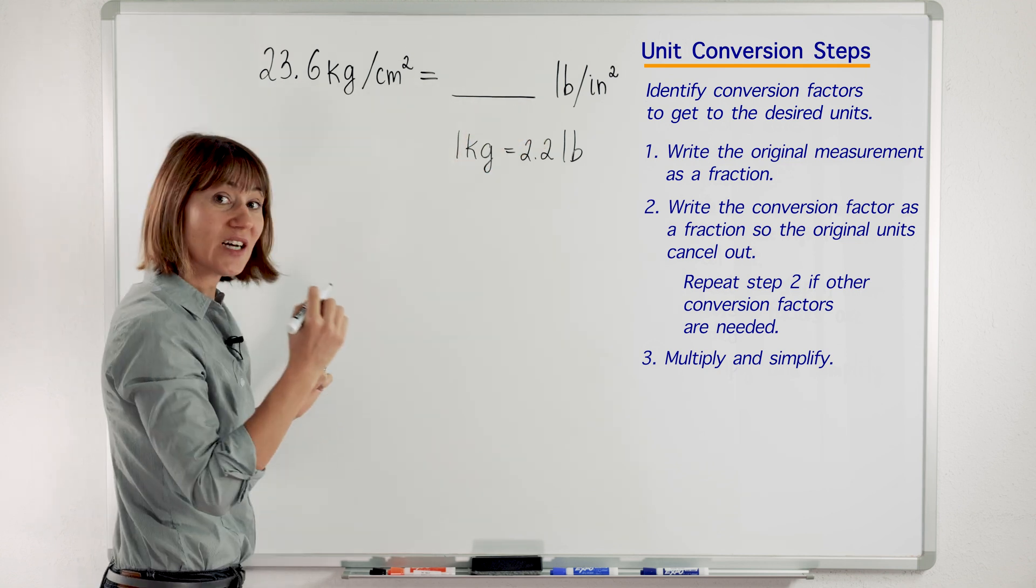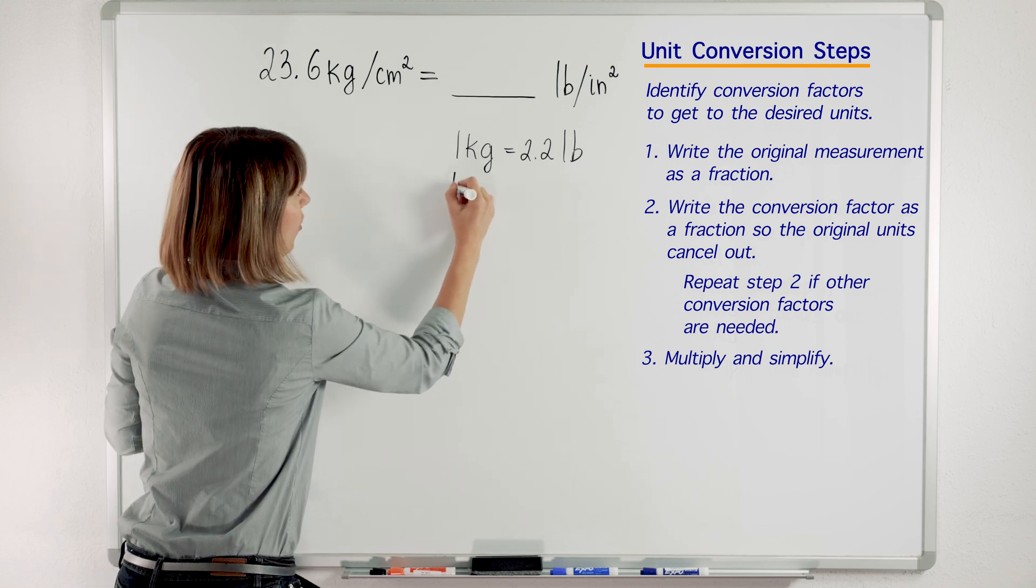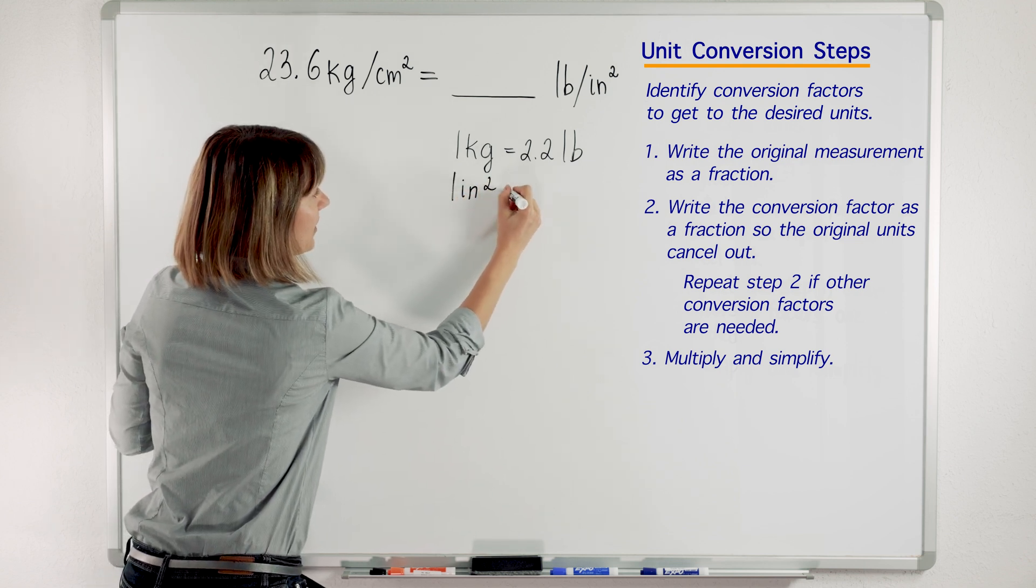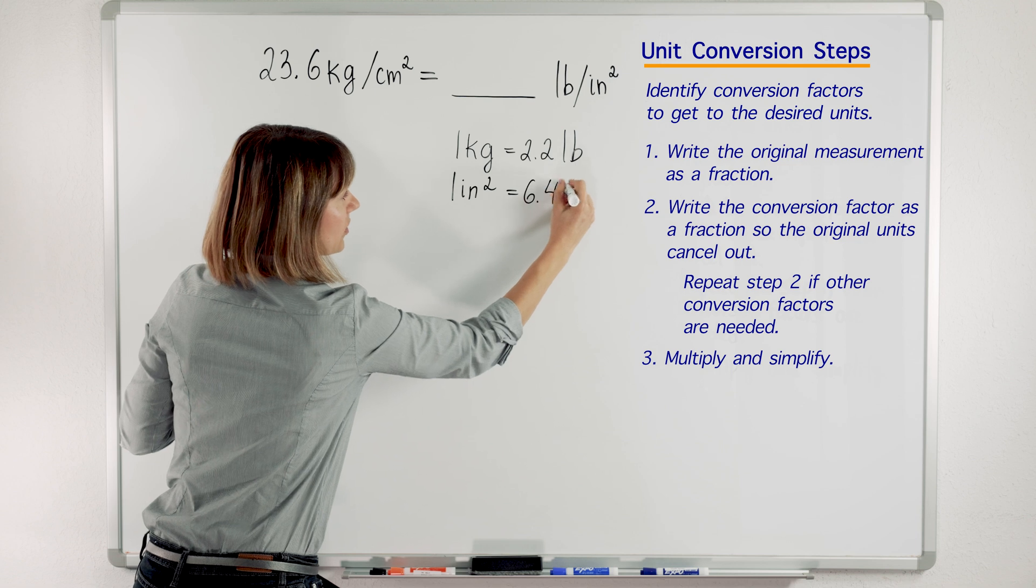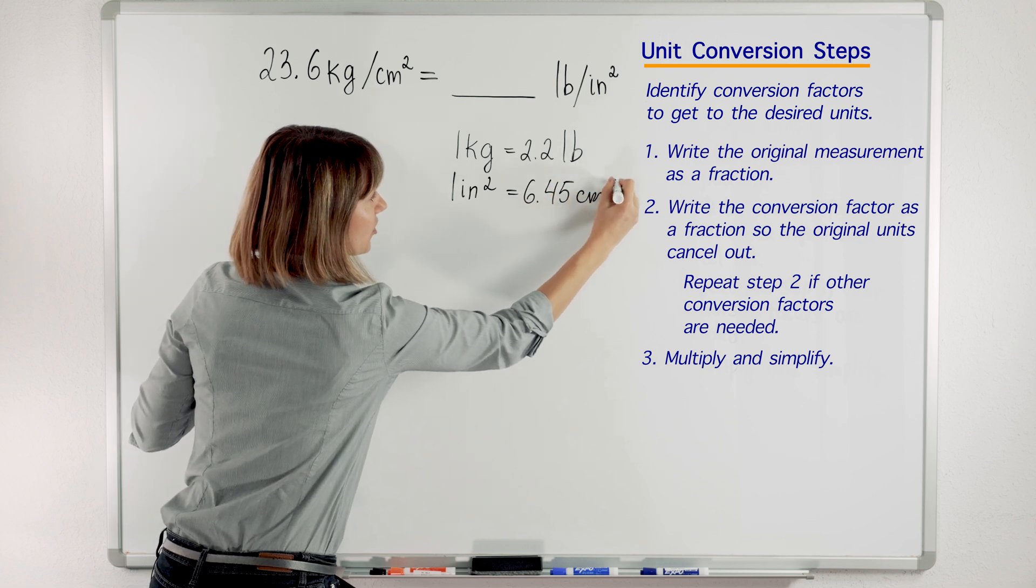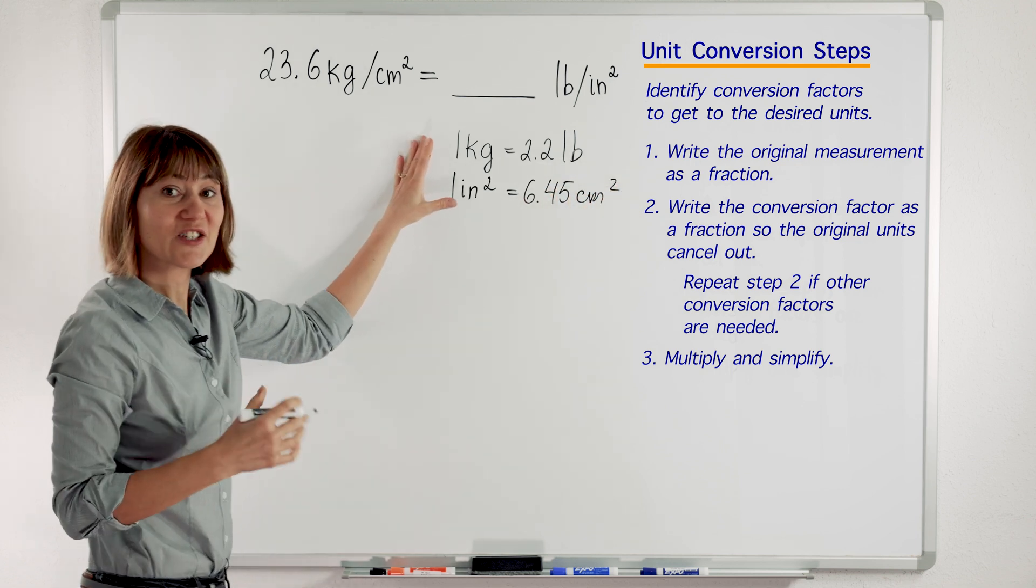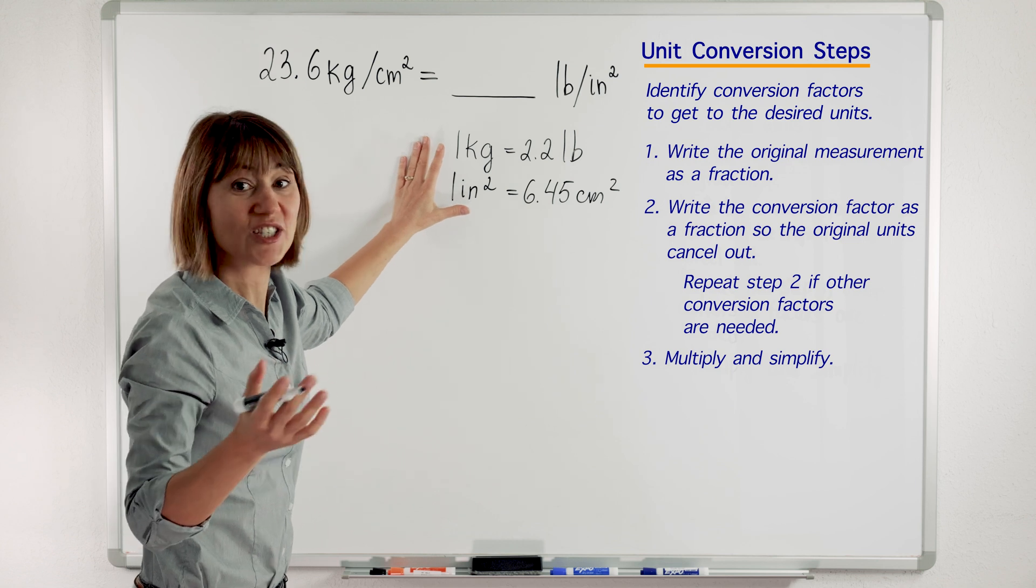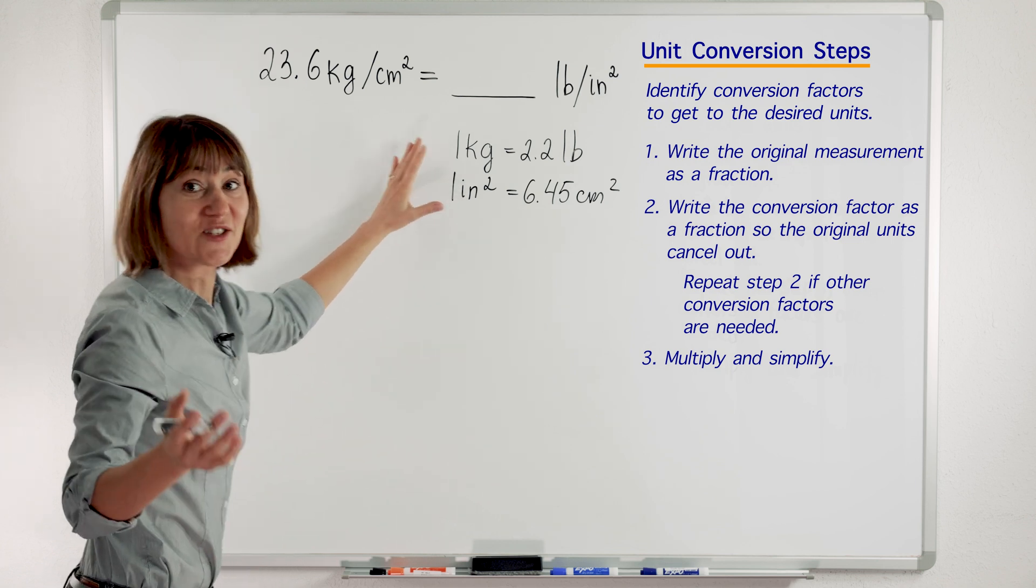Another conversion factor: one inch squared equals 6.45 centimeters squared. These conversion factors you can find in any conversion table or chart. So let's go!